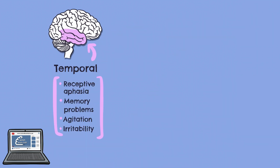As a result, temporal lobe damage can result in a range of clinical symptoms, including receptive aphasia owing to damage to Wernicke's area, memory problems, agitation and irritability.